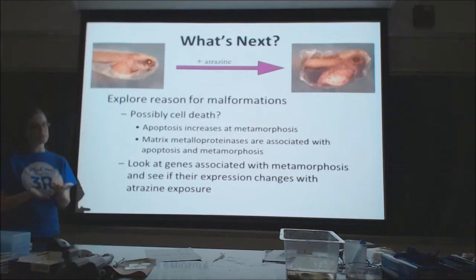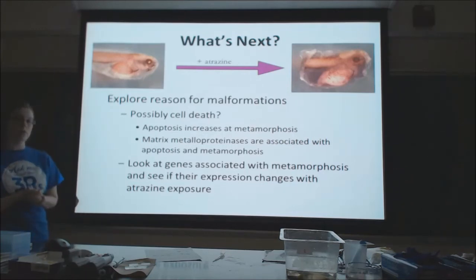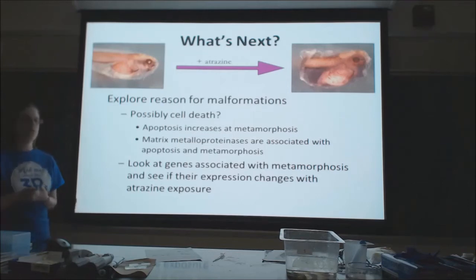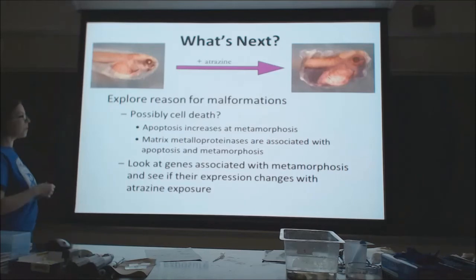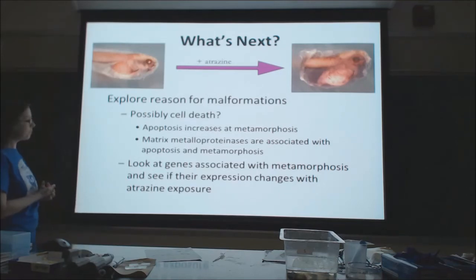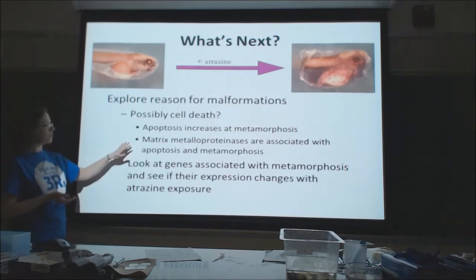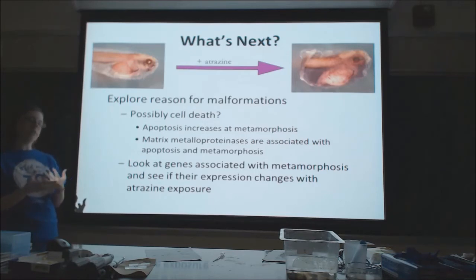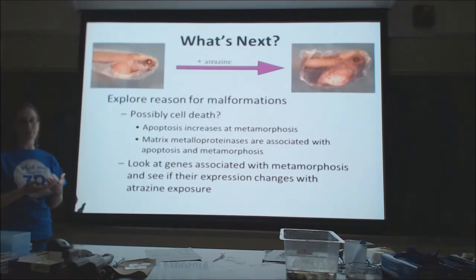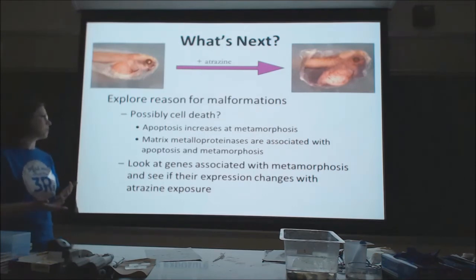One possible explanation for these malformations is cell death. Apoptosis increases at metamorphosis — normally a tadpole tail disappears when it metamorphoses into a frog due to cell death — so maybe atrazine starts these metamorphic processes too early. Additionally, enzymes called matrix metalloproteinases, which break down the matrix around cells and also increase at metamorphosis, could contribute to a shorter axis and malformed intestines. It would be interesting to examine genes associated with metamorphosis to see if atrazine exposure increases their expression.